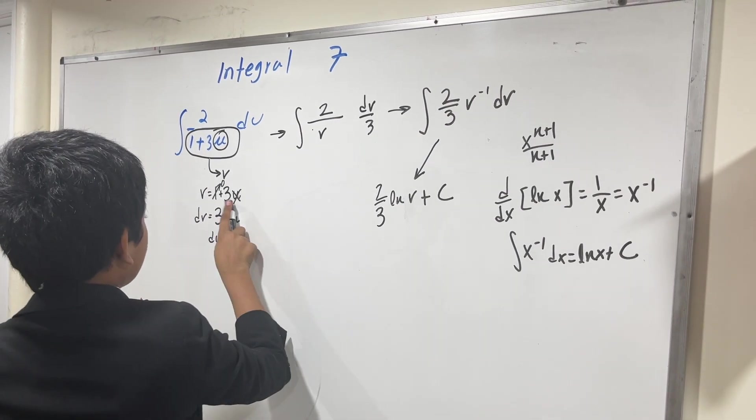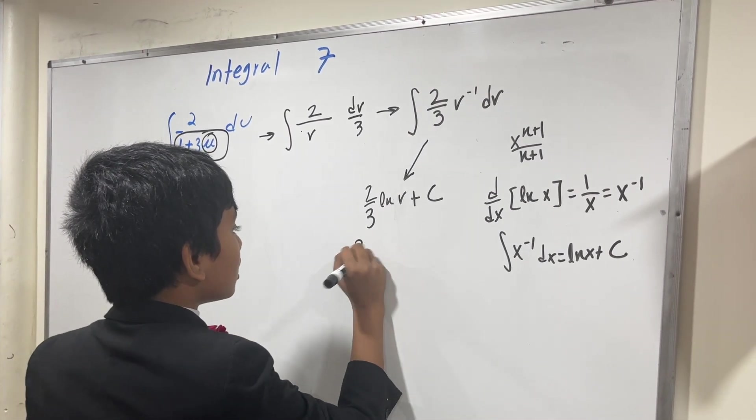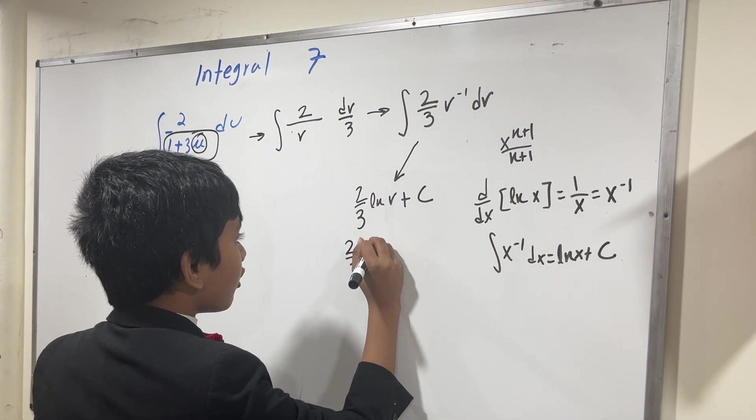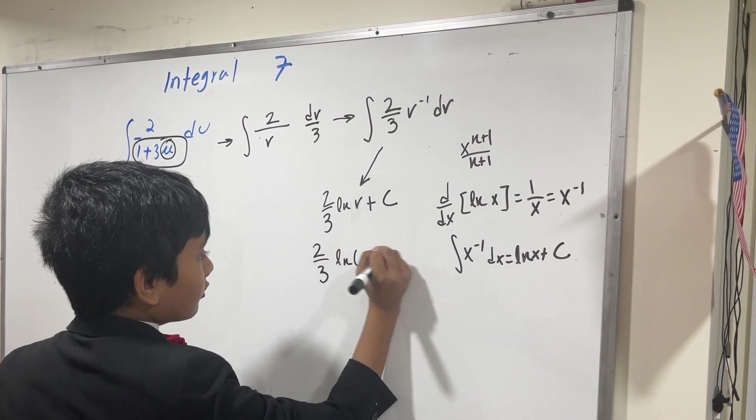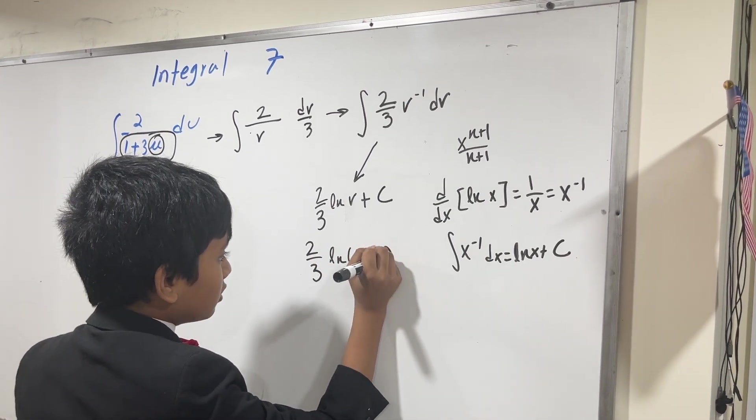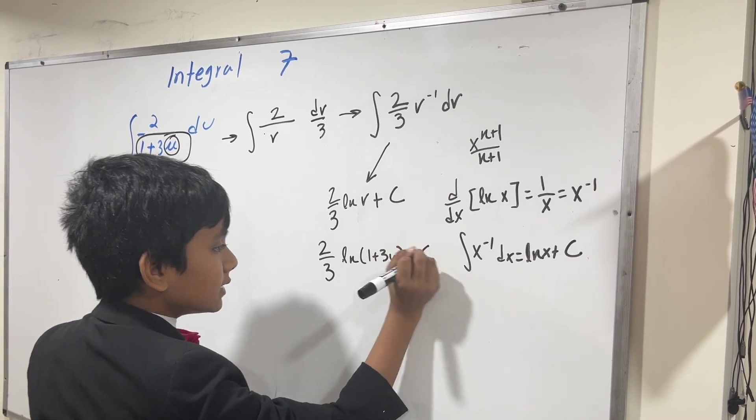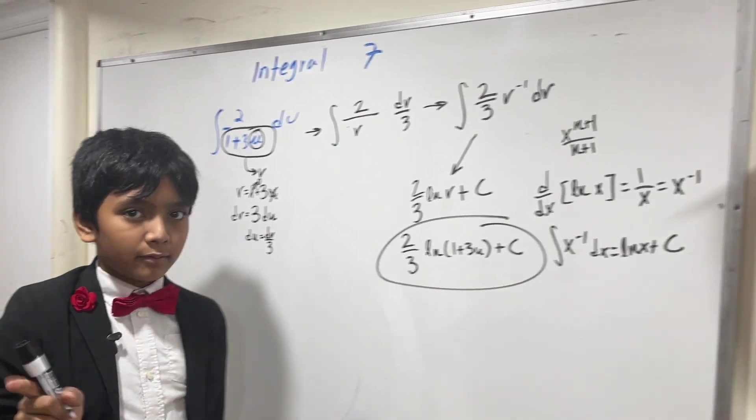So unsubbing, we get 2 over 3 ln of 1 plus 3u plus c. And that's it. Enjoy everybody for watching.